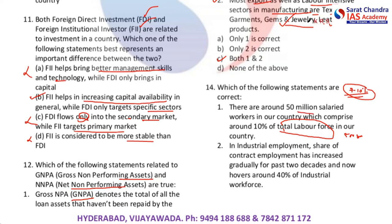The first statement — 50 million or 5 crore salaried workers comprising around 10 percent of the total labor force — is correct. Second statement: in industrial employment, the share of contract employment has increased gradually for the past two decades and now hovers around 40 percent of the industrial workforce. Every industry is now moving towards contractual employees because of labor issues. The share of contract employment has increased from 23 percent to 40 percent over the past two decades — this statement is also correct.